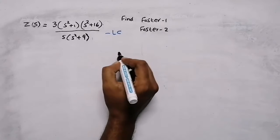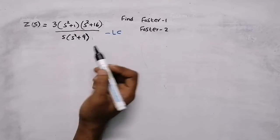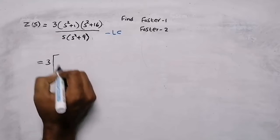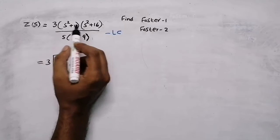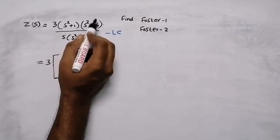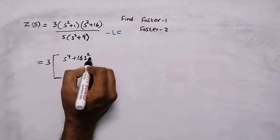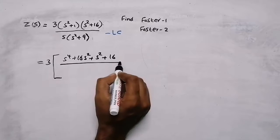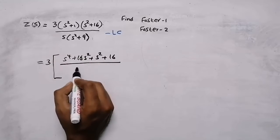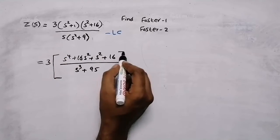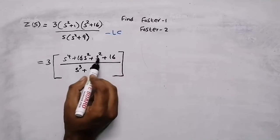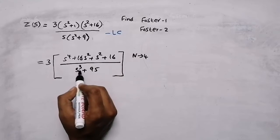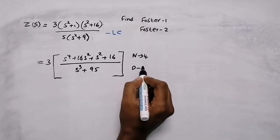In the next step we need to find the order of the numerator and denominator. To find the order we open the brackets. Taking 3 outside as a constant, and expanding: numerator gives s raised to 4 plus 17s squared plus 16, and the denominator gives s cubed plus 9s. The highest power of s in the numerator is 4, so order of numerator is 4. The highest power of s in the denominator is 3, so order of denominator is 3.